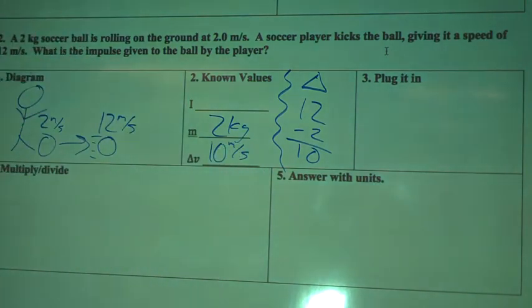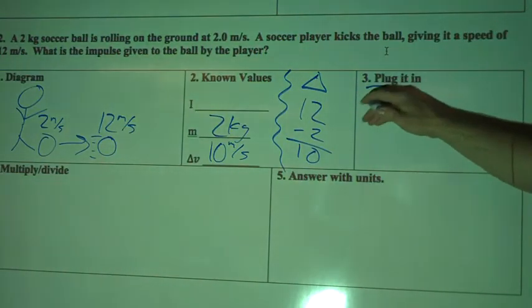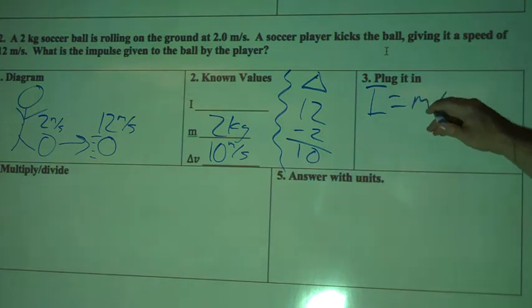We're talking about velocity here, so how fast something is going. Now plug it in. So I've got I, or impulse, equals m times delta v.